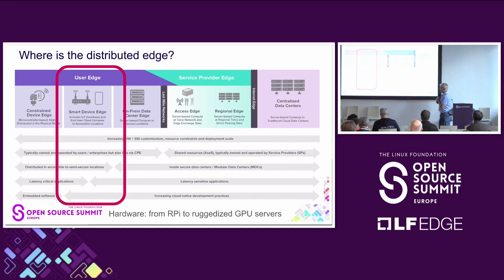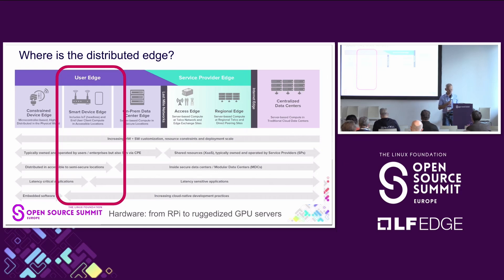The hardware at the distributed edge ranges from small things like a Raspberry Pi compute module to large, ruggedized servers with multiple TPUs.